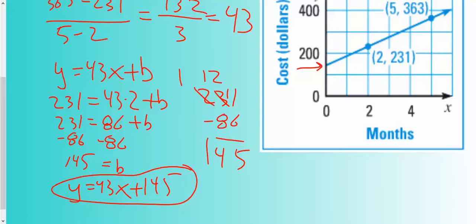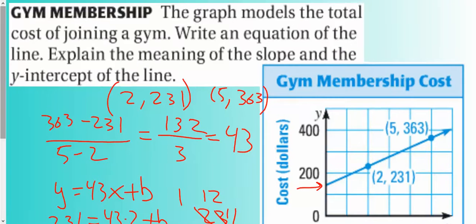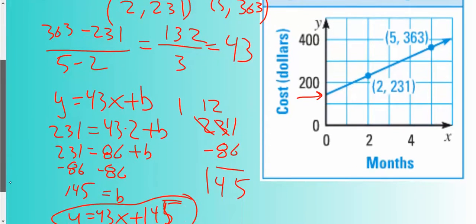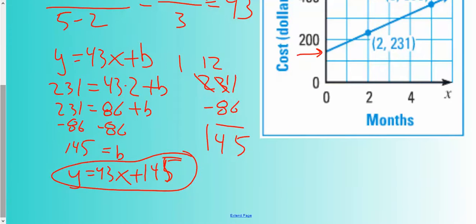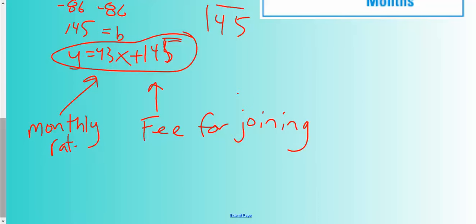So my equation is y equals 43x plus 145. Now I think they asked us to analyze this. It says explain the meaning of the slope and the y-intercept. We're talking about a gym, the cost of a gym. If I go to the gym for zero months, it costs me $145. So that would mean this is your fee for joining. And then the slope is going to be your monthly rate. Once you pay your flat fee, then you've got to still pay $43 per month.